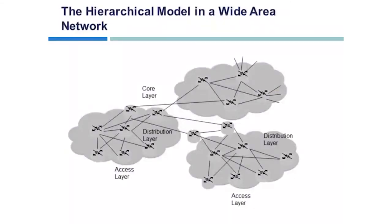The hierarchical model in a wide area network divides networks into the building access, building distribution, and building core layers. The building access layer is used to grant user access to network devices. In a network campus, the building access layer generally incorporates switched LAN devices with ports providing connectivity to workstations and servers. The building distribution layer aggregates the wiring closets and uses switches to segment workgroups and isolate network problems.